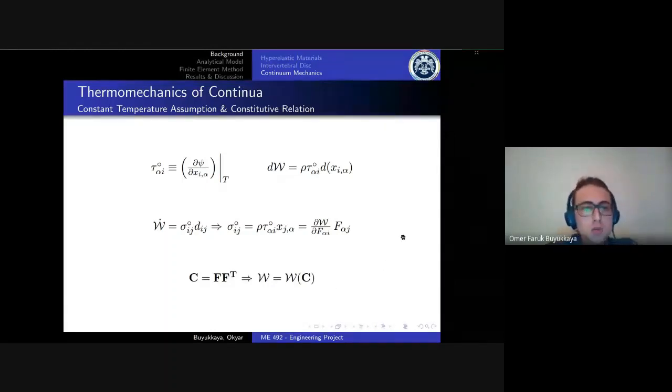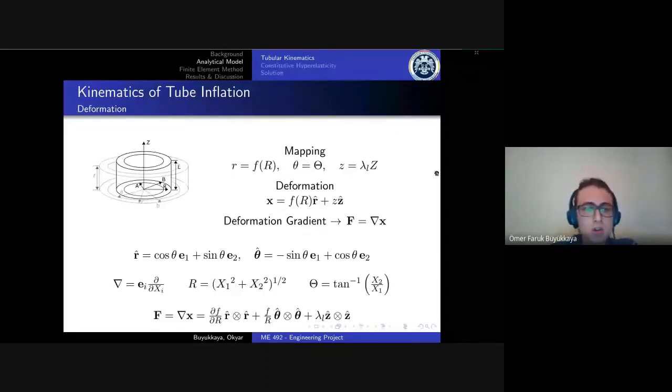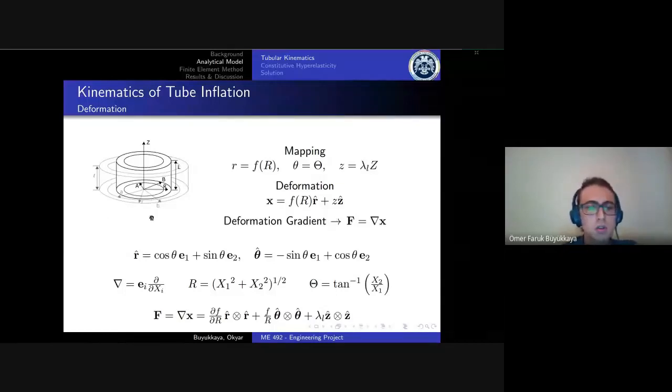We use capital letters for the reference configuration and lowercase letters for the current configuration. While finding the deformation gradient, we transform the Cartesian unit vectors into cylindrical ones and we transform Cartesian coordinates into cylindrical coordinates. We write them in terms of Cartesian coordinates because the gradient operator is in terms of Cartesian vectors.